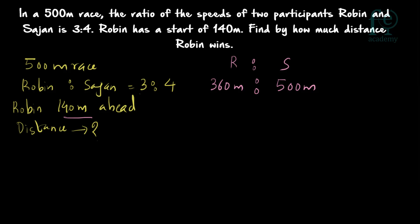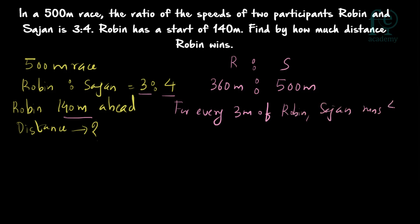The ratio of the speeds is given as 3 is to 4. If we assume time is constant, then we can say for every 3 meters of Robin, Sajan will be covering 4 meters. When time is constant, speed into time is equal to distance, so this speed ratio can be converted to a distance ratio. For every 3 meters of Robin, Sajan will be running 4 meters.